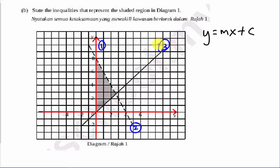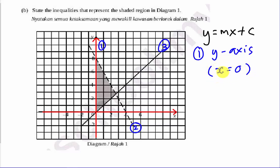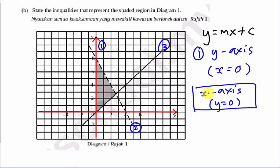I'll teach you how to find the first equation. Whenever you see the line is the y-axis, you just remember: the y-axis has the equation x equals to 0. Also note that the x-axis means y equals to 0 — just in case the exam asks about it. But for this question, what you need is: y-axis means x equals to 0.